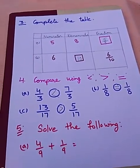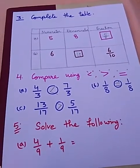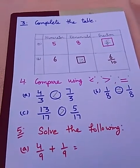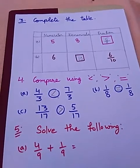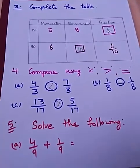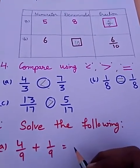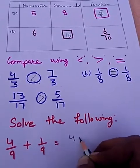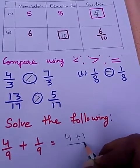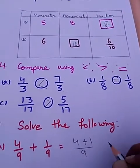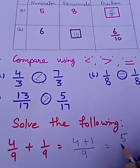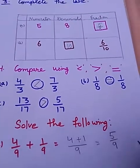Now fifth question, solve the following. 4/9 plus 1/9. Here denominators are same, so we will add only numerators. 4 plus 1, denominator is same. 4 plus 1 is 5, so 5/9.